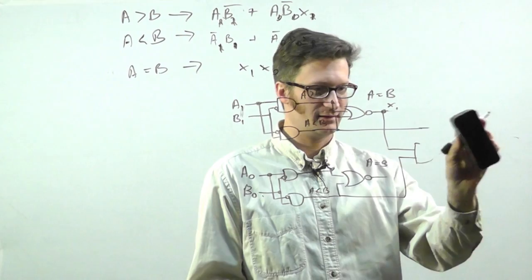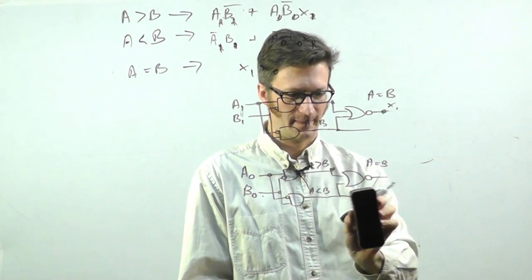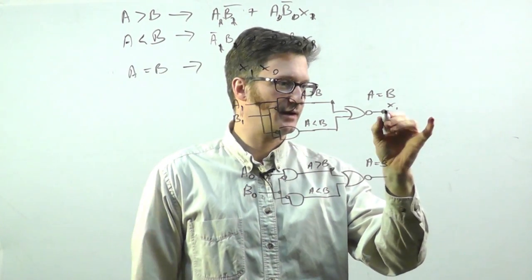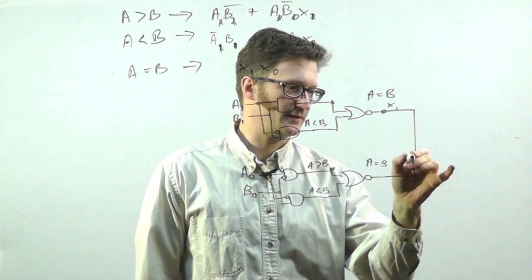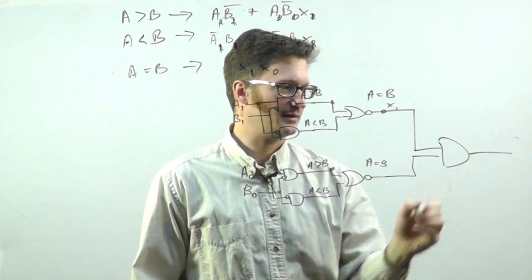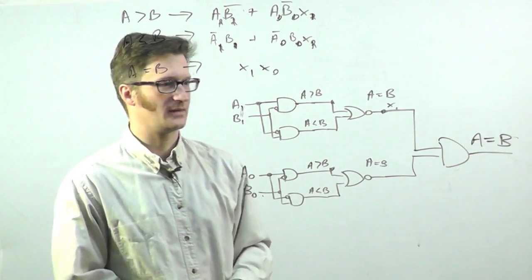And finally, let's do A equals to B. This one's the easiest. I just take the different X₁ and X₂s. Run that into an AND gate. And here we have A equals to B. Just like that.